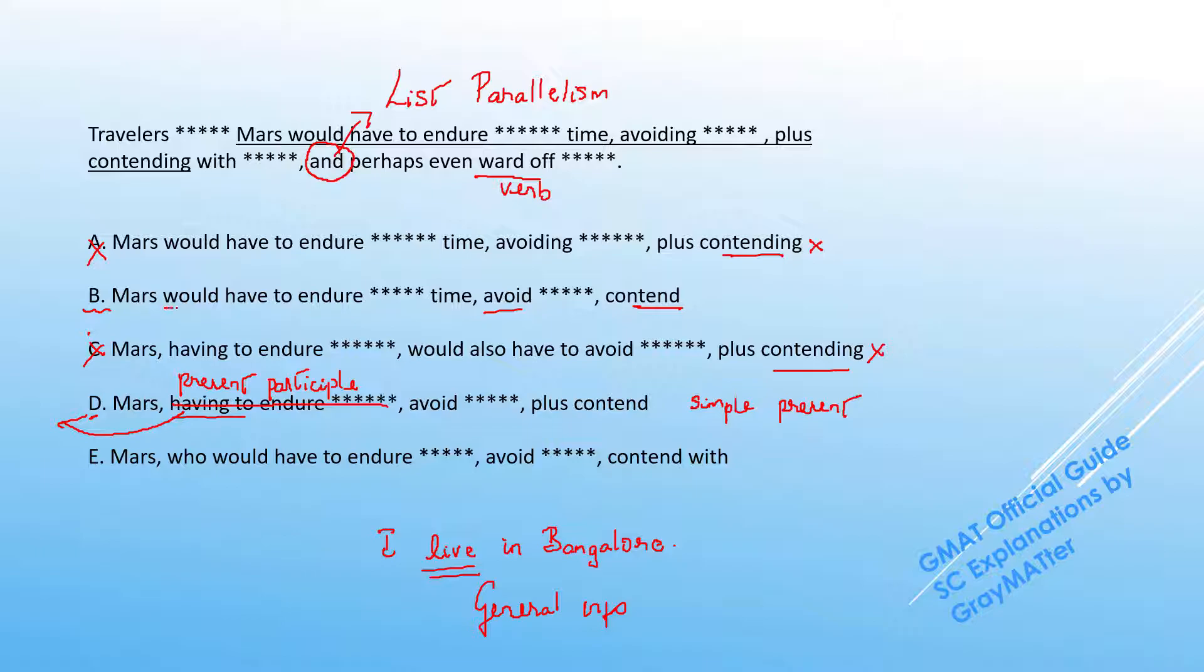So if you differentiate that with B, we have 'would have to endure'. We generally use the word 'would' for hypothetical situations. For example, 'I would want a Lamborghini' or 'I would buy a Lamborghini'. With either of these statements, I'm trying to imagine a situation. That's what B is trying to convey - that the travelers to Mars would have to go through things like these.